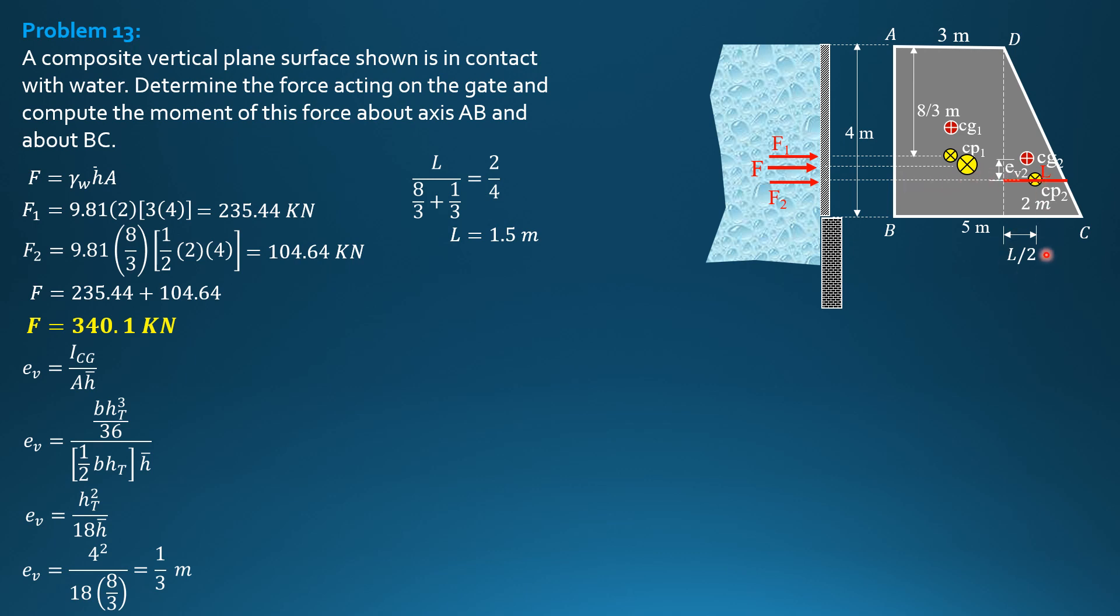So moment about AB is 235.44 times 3/2 plus 104.64 times 3 plus L over 2. So computing, moment about axis AB is 745.6 kilonewton-meters. And finally, for moment about BC...